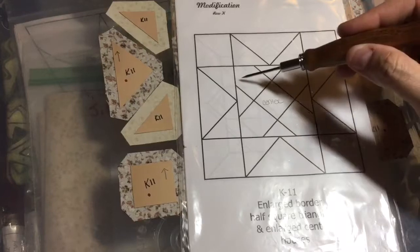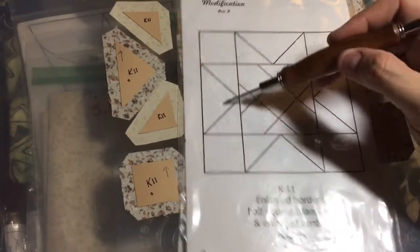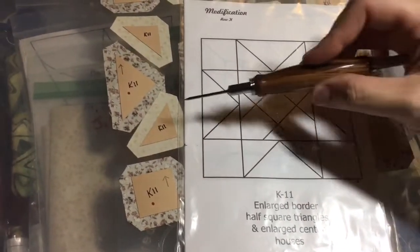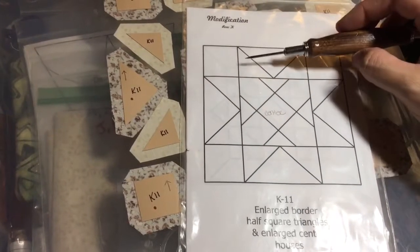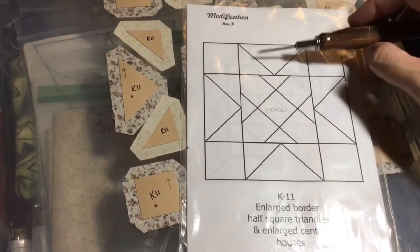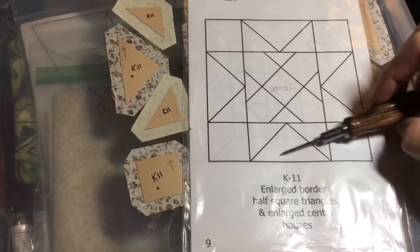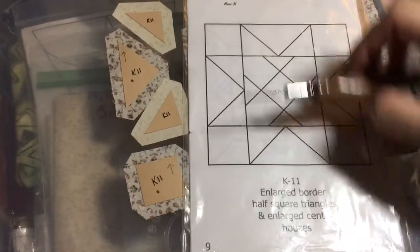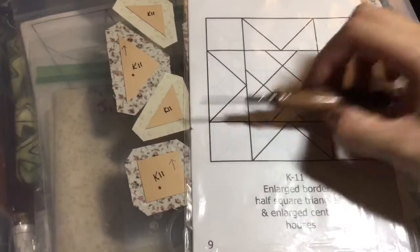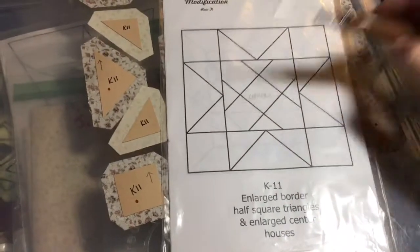Once I assemble this center section I will assemble these three pieces and these three pieces and then put this together as a row. Then this rectangle will be assembled and then these attach to it. This rectangle will be assembled and these attach to it and then these whole rows will be put together and that's how you're going to break down this block for assembly.